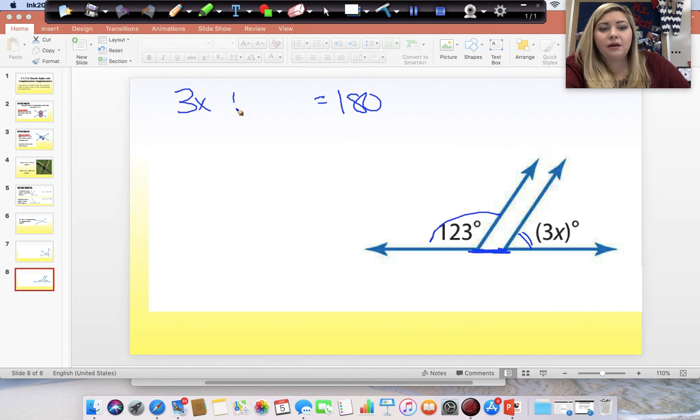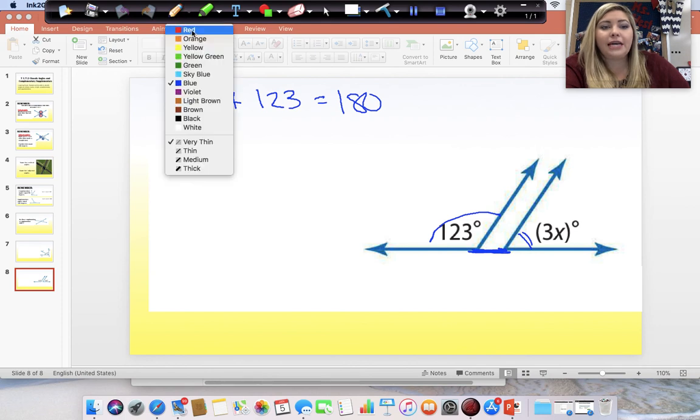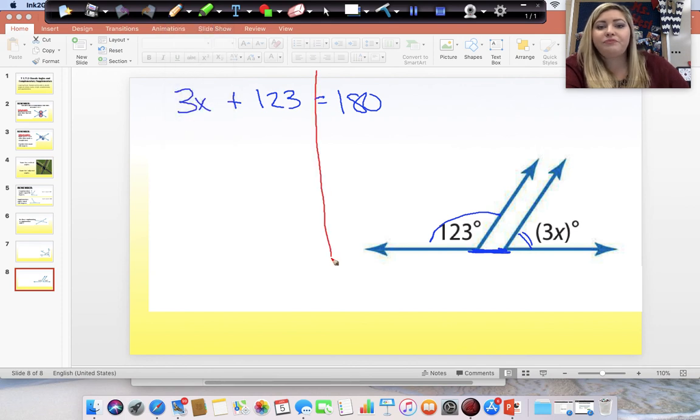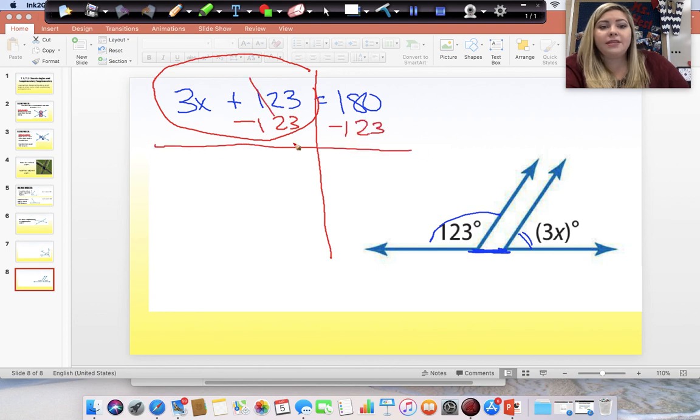So, 3x plus 123. So, I'm going to draw my line straight down from my equal sign. I'm going to start on my side with my variable, but I'm going to start with the number without the variable. So, I'm going to subtract 123 from both sides.